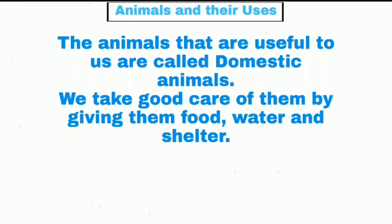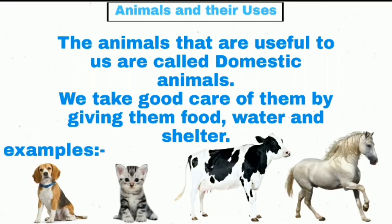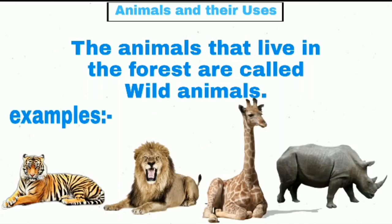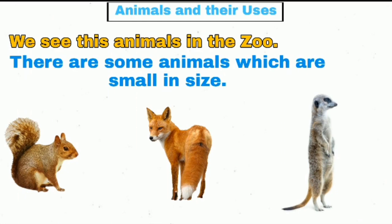water and shelter. Examples: dog, cat, cow, horse, etc. The animals that live in the forest are called wild animals. Examples: tiger, lion, giraffe, rhinoceros, etc. We see these animals in the zoo.